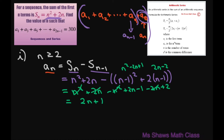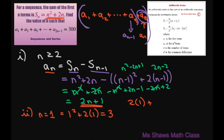Now let's check Case 2, which is when n equals 1. When n equals 1, substituting into the sum formula gives 1 squared plus 2 times 1, which equals 3. If you substitute n equals 1 into 2n plus 1, you also get 3. Since both cases give the same result, our nth term is 2n plus 1, valid for n greater than or equal to 1.